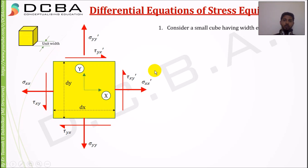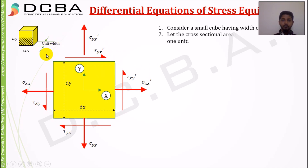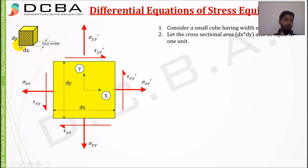Consider a small cube having width equal to 1 unit. Let the cross-sectional area of that cube also be equal to 1 unit. So if dx is the width and dy is the height of that cube, then dx times dy is equal to 1 unit area.